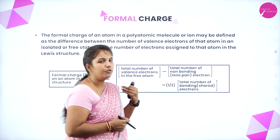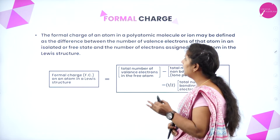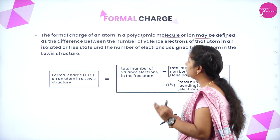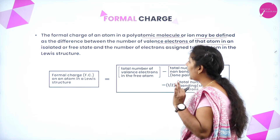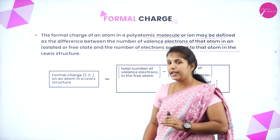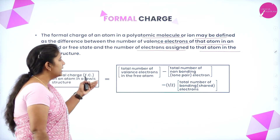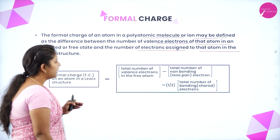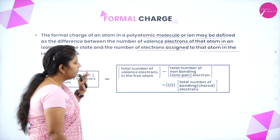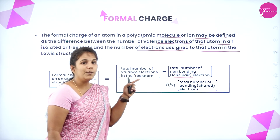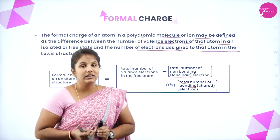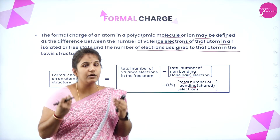Now let us see what is formal charge. The formal charge of an atom in a polyatomic molecule or ion may be defined as the difference between the number of valence electrons of that atom in an isolated or free state and the number of electrons assigned to it in the Lewis structure. Formal charge = total valence electrons of free atom − total non-bonding (lone pair) electrons − 1/2 × total number of shared (bonding) electrons.